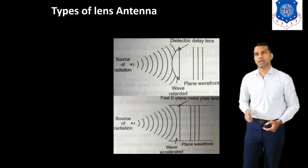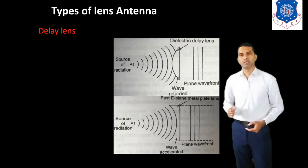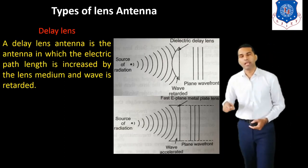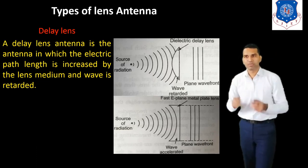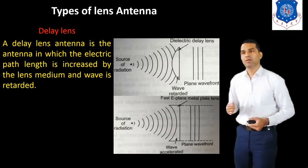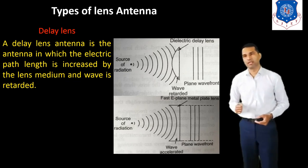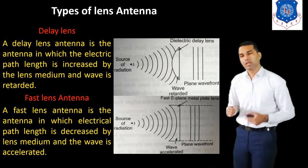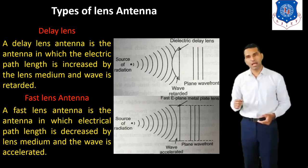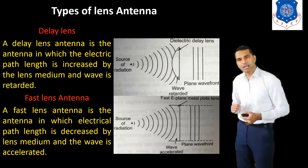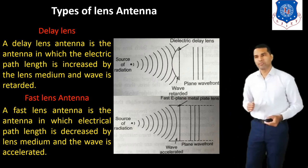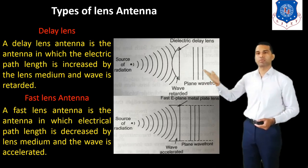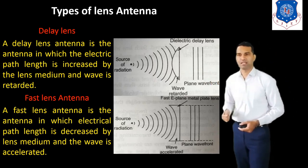Now we discuss another type of Lens Antenna: the Delay Lens. A Delay Lens Antenna is an antenna in which the electrical path length is increased by the lens medium and the wave is retarded. The second type is the Fast Lens Antenna, in which the electrical path length is decreased by the lens medium and the wave is accelerated. So these are the two types: the Delay Lens and the Fast Lens Antenna.